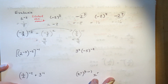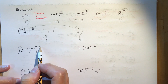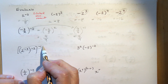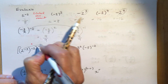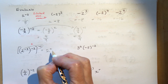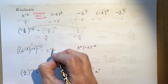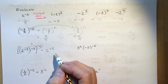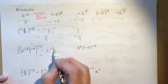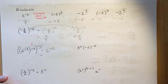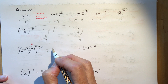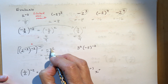Now some more difficult examples with multiple powers. When you have power to a power to a power, it's all multiplication. A negative times a negative times a negative gives a negative result. Multiplying three times two is six, times one is six — so I get two to the negative six. Two to the power of six is 64, and the negative means one over it: one over 64.